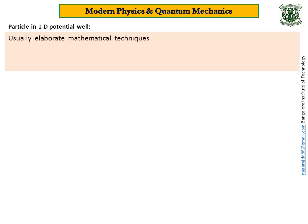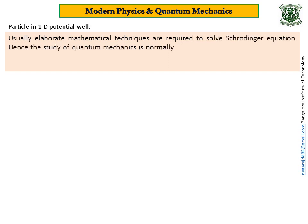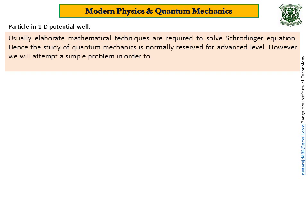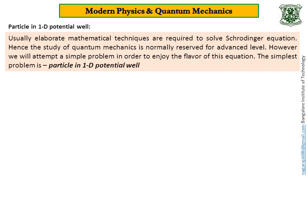Usually, elaborate mathematical techniques are required to solve the Schrodinger Equation. Hence, the study of Quantum Mechanics is normally reserved for advanced level. However, we will attempt a simple problem in order to enjoy the flavor of this equation. The simplest problem is Particle in a One-Dimensional Potential Well.